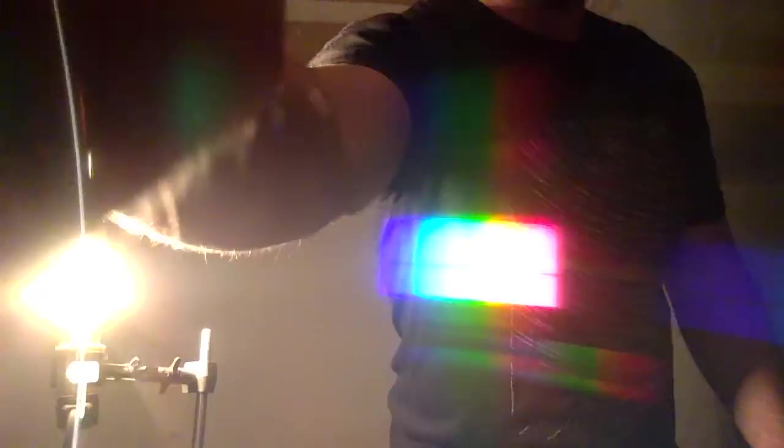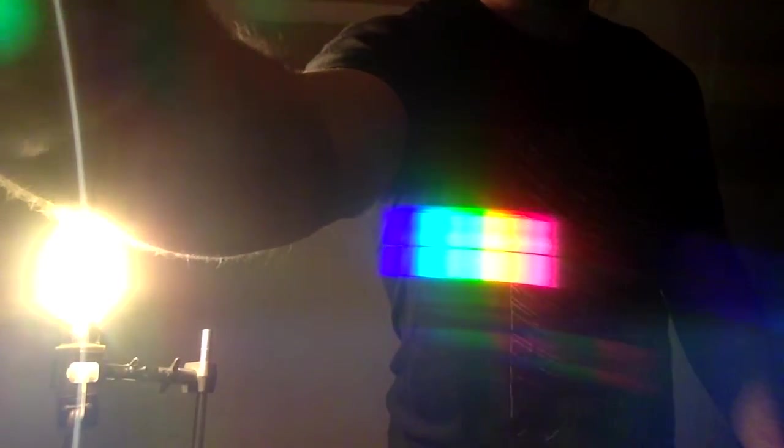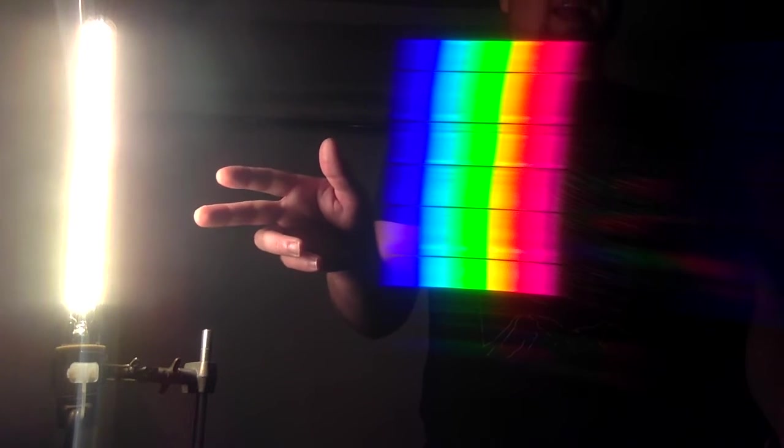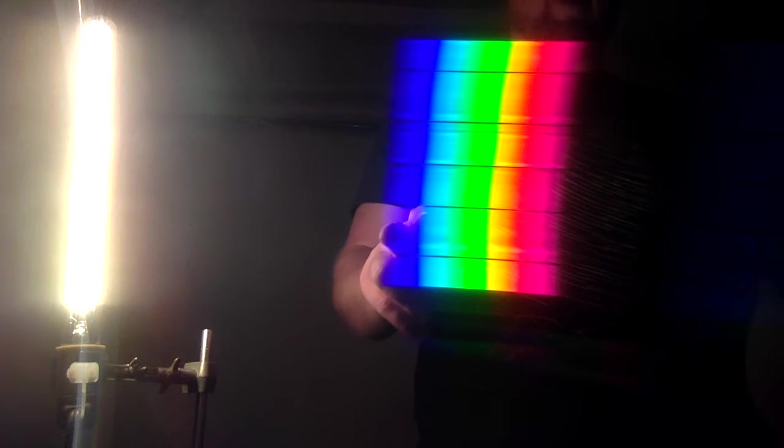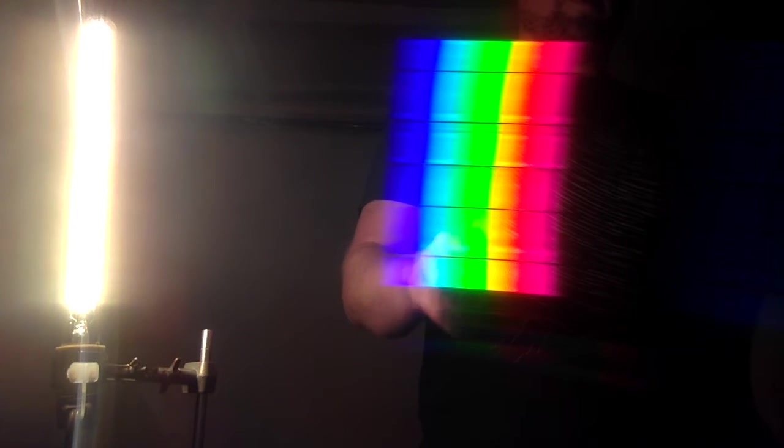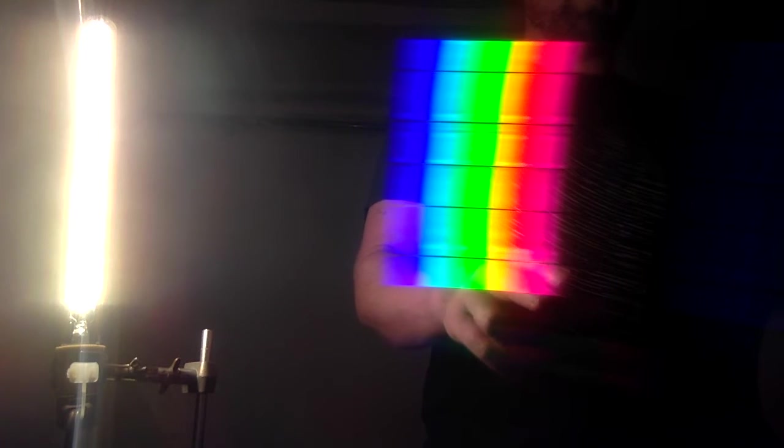We can see that these work by blocking light. So let's get our diffraction grating into place. There we go. We can see from our bright lamp here, we've got every color of light that our eyes can see. We've got violet to blue to green to yellow to orange to red.